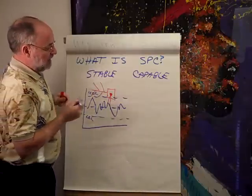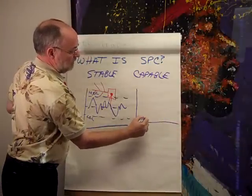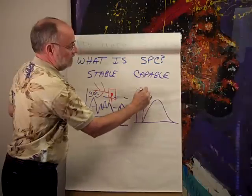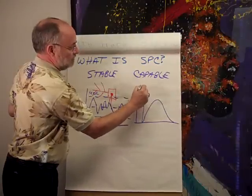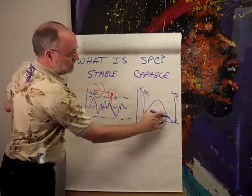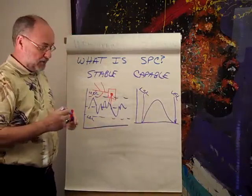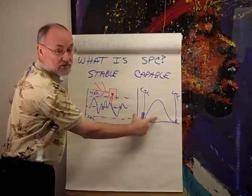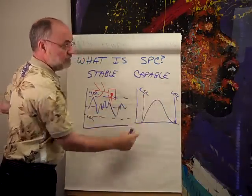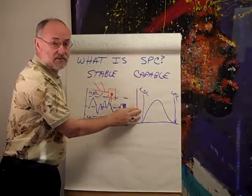From the capability standpoint, we're going to use histograms on variable data. If we have a histogram with a lower spec limit and an upper spec limit, we want to know: does our process fit between these two goalposts? Or is it shifted off to one side? Does it span too much — do we need to narrow it?